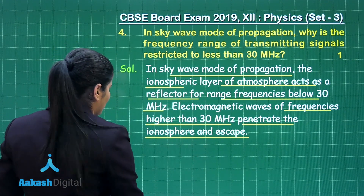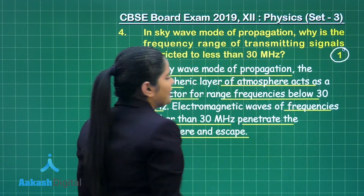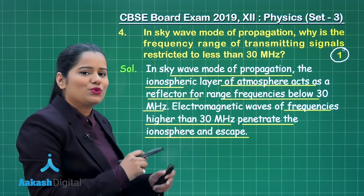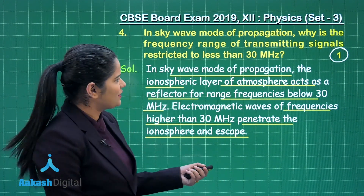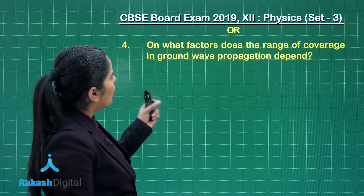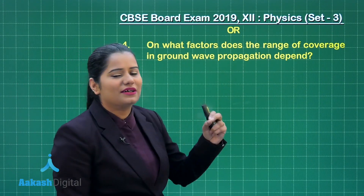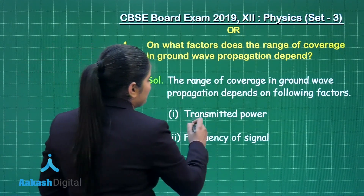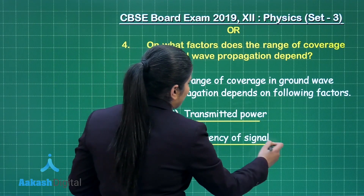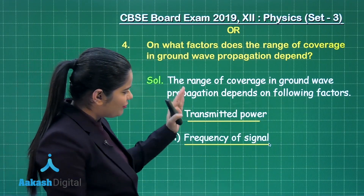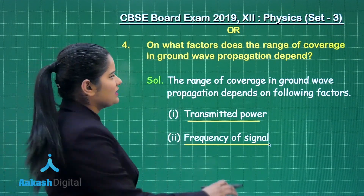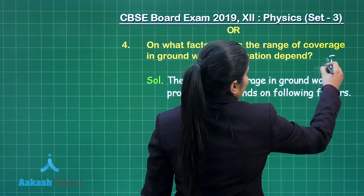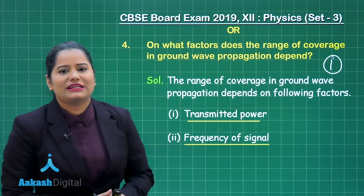I hope this answer is clear. For this question you are going to fetch one mark if you have written this answer. Now let us look at the second choice of the same question. This says: on what factors does the range of coverage in ground wave propagation depend? It depends on the transmitted power and the frequency of signals, and you are going to get half a mark for each of these factors, giving you one mark for this question.